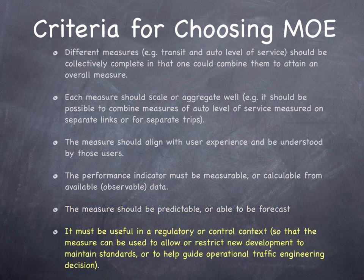The measure only matters if it is used in a regulatory or control context. So if you change something, such as the signal timing, you can measure the change in your level of service measure. If you prohibit a new development from going in near an intersection, you can see how the level of service at the intersection would change.